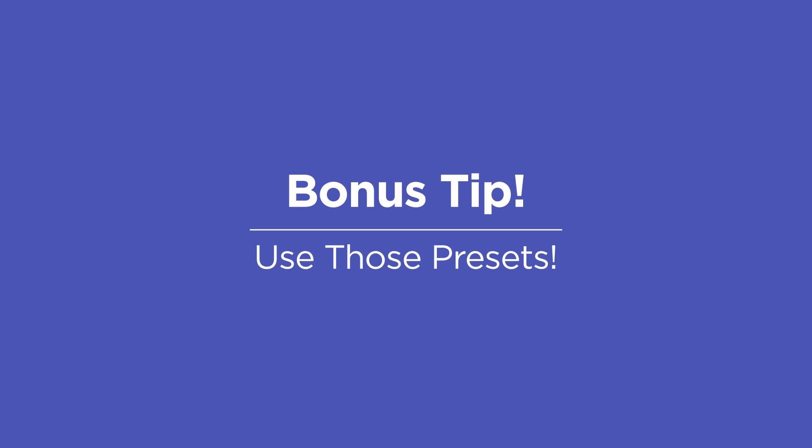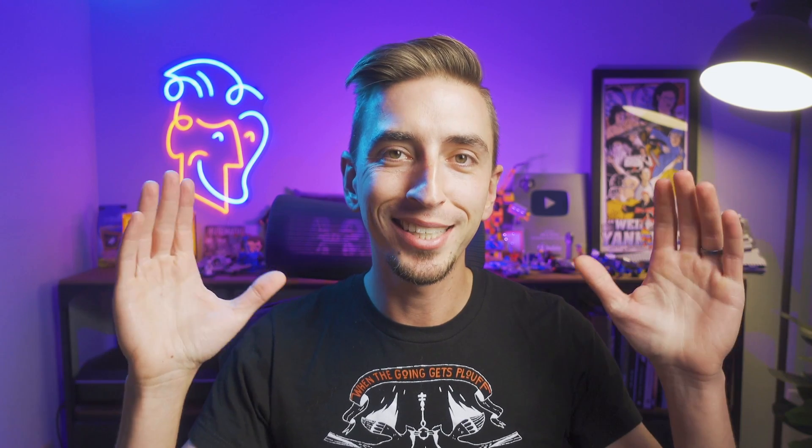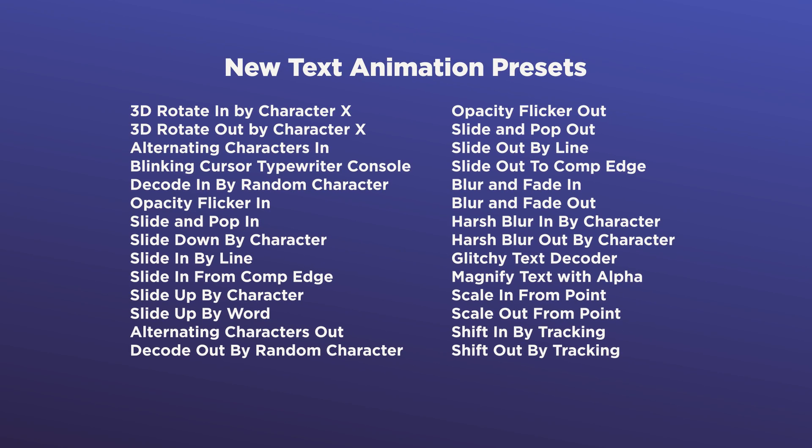Bonus tip: use text animation presets. Animating text is probably something you're already trying to learn how to do, but text animators can look complex. You don't have to learn how to use text animators yet, because there are lots of text animation presets that come with After Effects. In fact, a ton of them were just added to the most recent version of After Effects — eight of which were created by yours truly. Get ready to take a screenshot, because this is a list of all the new text animation presets now included with After Effects. You can search for any of them by name in the Effects and Presets panel.